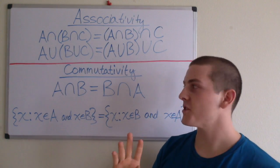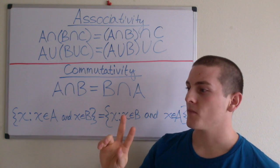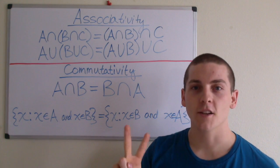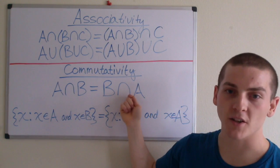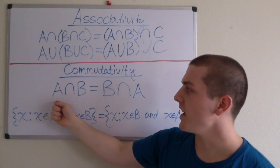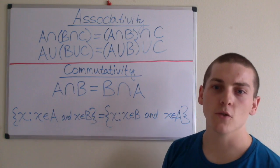Commutativity is essentially just saying that we can switch which side our sets are relative to the operation. So A intersection B is the same thing as B intersection A, and the same thing as A union B is equal to B union A.